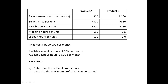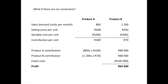If there's no constraint, we will sell 800 of A and 1,200 of B at the sales demand. To calculate contribution per unit: for A it's selling price less variable cost = 100 rand per unit; for B it's 350 less 280 = 70 rand per unit. So that's how much each single unit contributes towards profit — 100 rand for A and 70 rand for B.